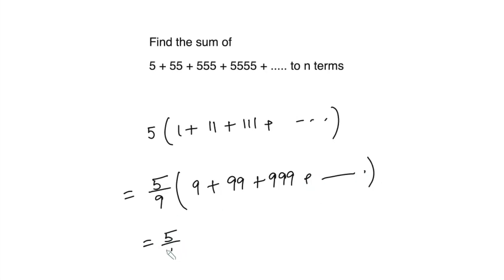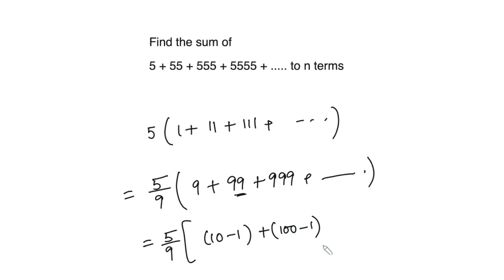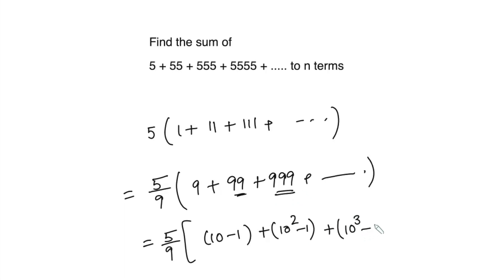Now 9 can be written as 10 minus 1, 99 can be written as 100 minus 1, and 100 can be written as 10 squared, so 10 squared minus 1. Similarly, 999 can be written as 10 cubed minus 1, and so on.